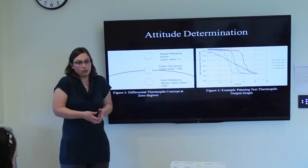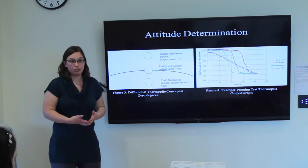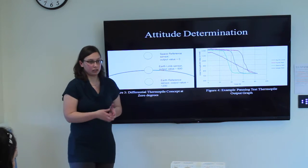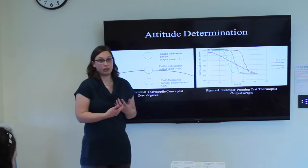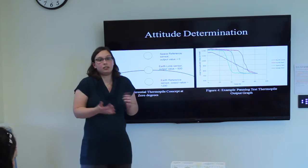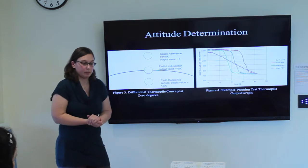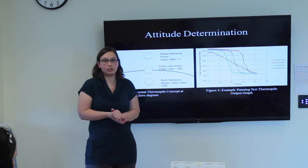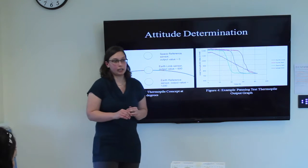Other sensors do include the magnetometer, which measures the magnetic field, the Earth's magnetic field out in space. Think of it like a space compass, a 3D space compass, as well as coarse sun sensors placed on solar panels.